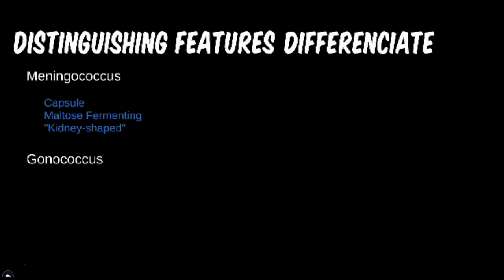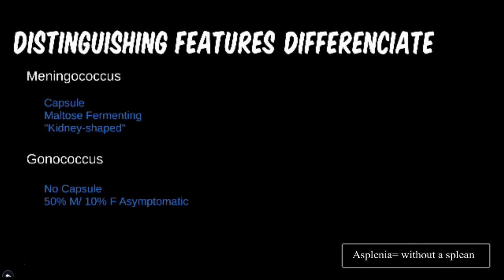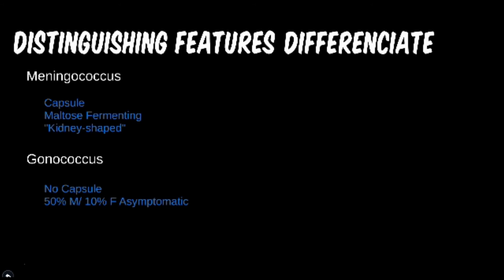N. meningitidis is also called kidney-shaped under the microscope. These are mostly low yield details but may appear on a quiz. Gonorrhea-causing Neisseria, on the other hand, don't have a capsule — there is no increased risk of this disease in patients with complement deficiency or asplenia. However, without proper vaccination and with around 50% of men and 10% of women being asymptomatic when infected, this helps explain why this particular STD is so prevalent in the western world.